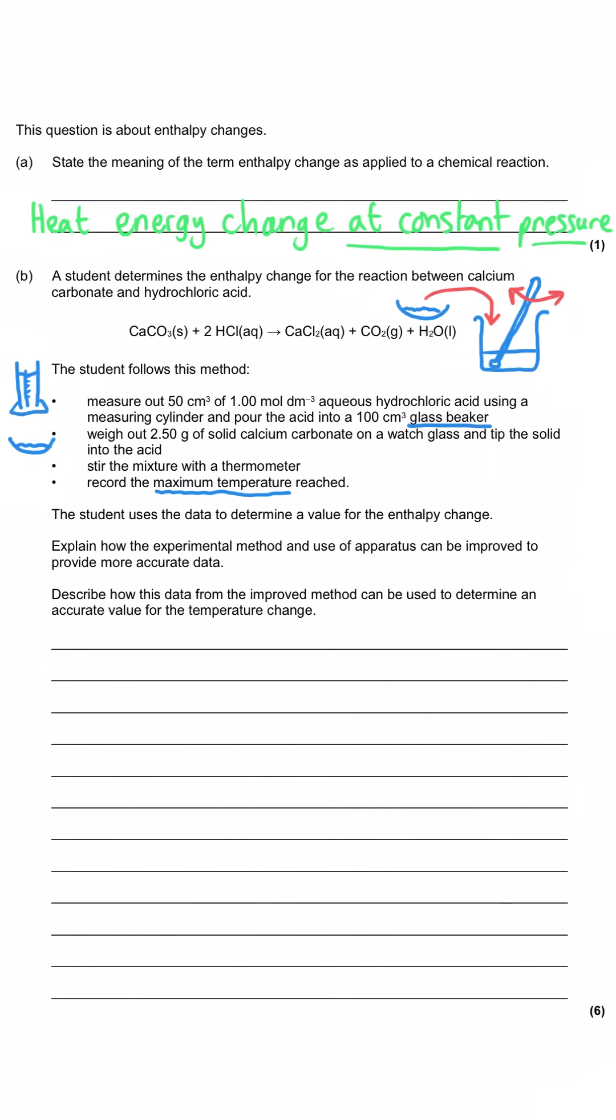The student uses that data to determine an enthalpy change. Our commands kick in because they're asking us to explain how the experimental method and use of apparatus can be improved to provide more accurate data, and describe how that data could be used to determine an accurate value for the temperature change delta T. We need to recognize some of the limitations of the method they've described to us. They never actually talked about recording the starting temperature so that's a little bit of an issue in itself. When we see a question asking us to determine an accurate value for the temperature change, you need to be thinking this is a method where we're talking about the extrapolation technique.